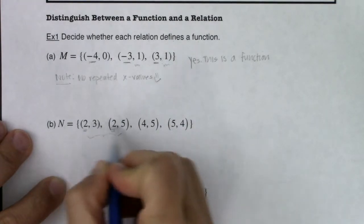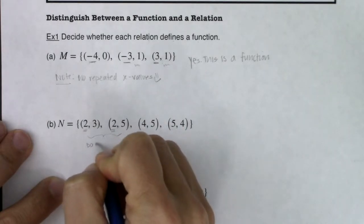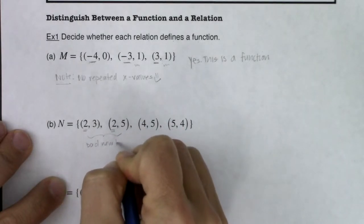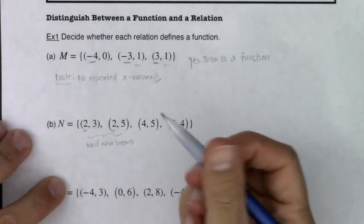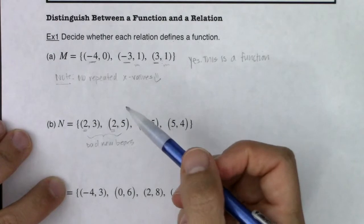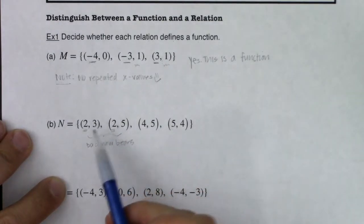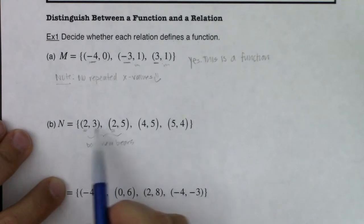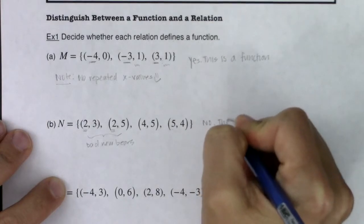So 2 is getting mapped to two different Y values. We would say this is bad news bears. It's an old movie, but it's now just become an expression, or at least for my age group. But we've got bad news bears here because 2 is getting mapped to two different Y values. It's getting mapped to 3 and it's getting mapped to 5. So I would say on this front, no, this is not a function.